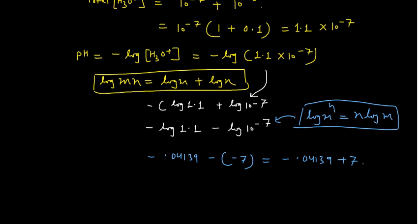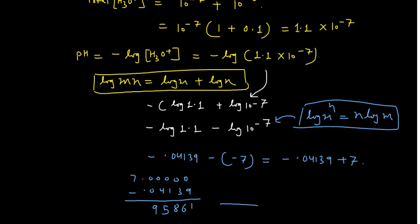Solving further: 7.0000 minus 0.04139. Working through the arithmetic: 10 minus 9 is 1, 9 minus 3 is 6, 9 minus 1 is 8, 9 minus 4 is 5, and you are left with 9 and 0.6. So the answer is pH equals 6.95861.